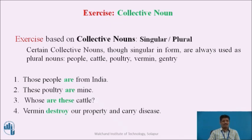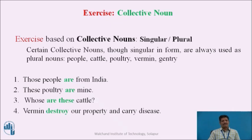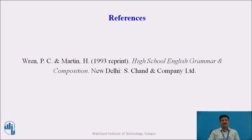In sentence 1, 'Those people are from India' — 'people,' though singular in form, is always used as a plural noun, so we use the plural verb 'are.' In sentence 2, 'These poultry are mine' — same rule applies. In sentence 3, 'Whose are these cattle?' — 'cattle' is always used as a plural noun. In sentence 4, 'Women destroy our property and carry disease' — 'women' is always used as a plural noun, so we use the plural verb 'destroy.' We will discuss the remaining nouns in the next session. Thank you very much.